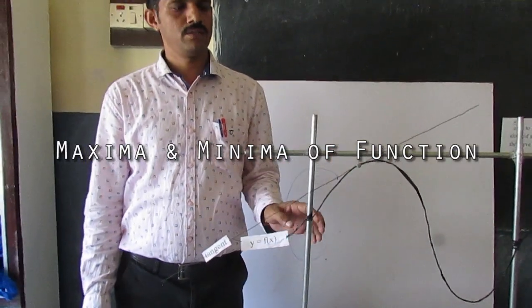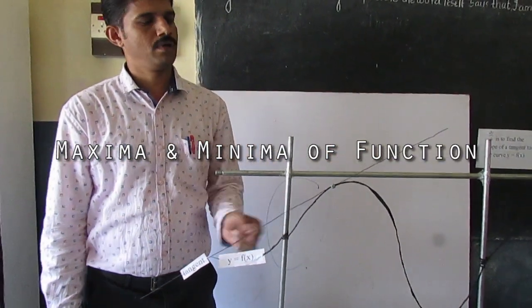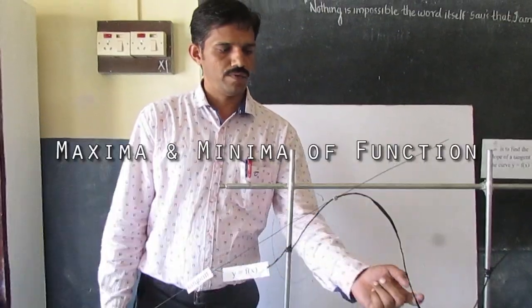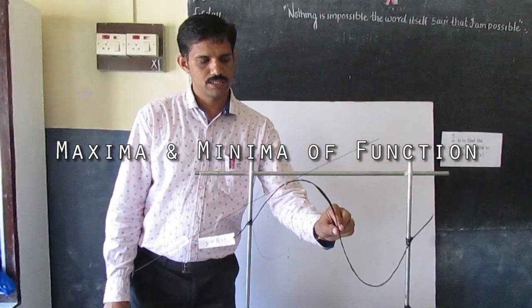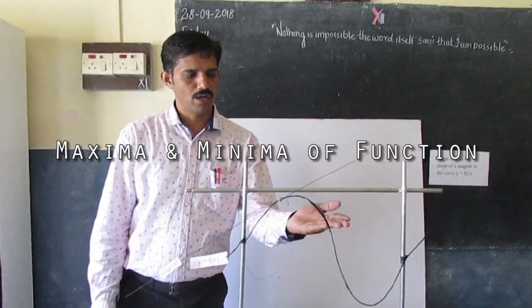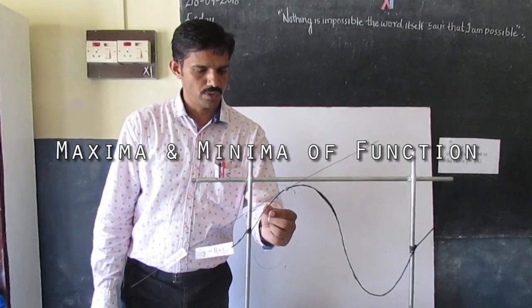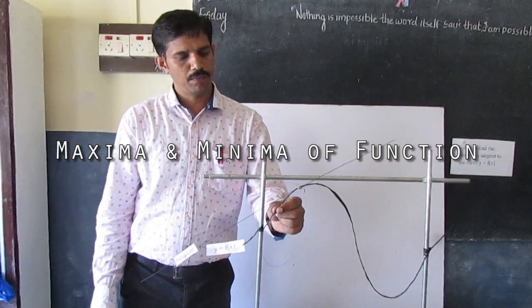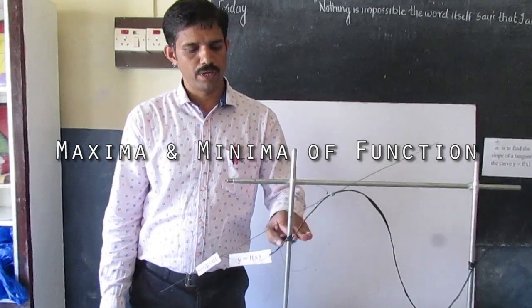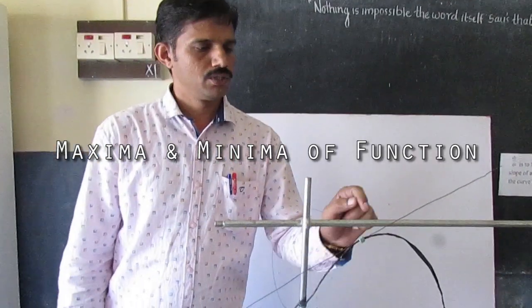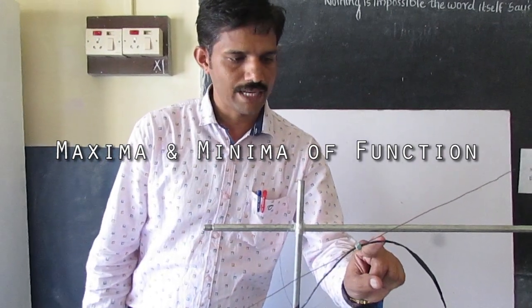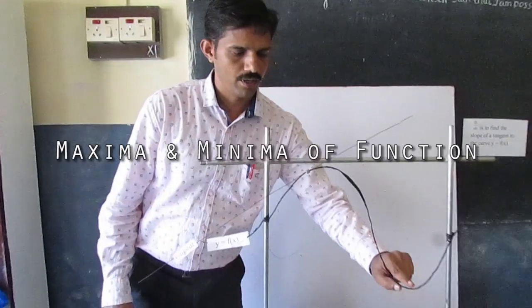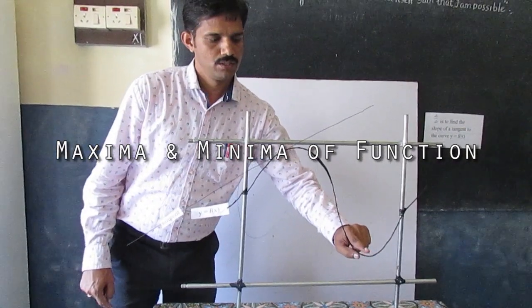We have a curve y equals f of x with a maximum and minimum. A point is not a maximum if there are many values above and below it. We know by the picture that this point is the maximum point and this point is the minimum point.